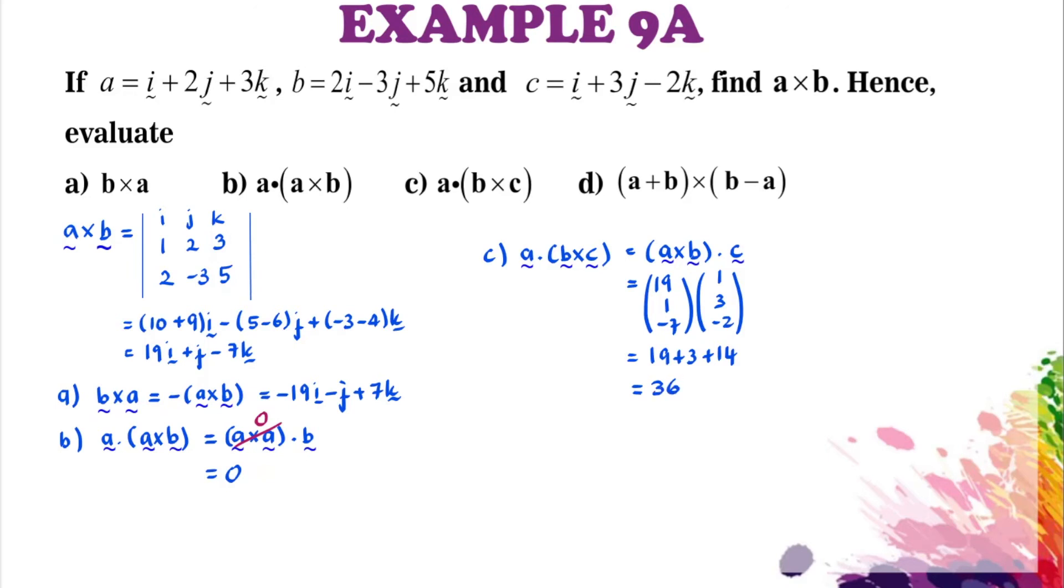Then the last part, part D: A plus B cross B minus A, using the distributive properties. So we're going to have A cross B plus B cross B plus B cross negative A. Then we can take out the negative sign.